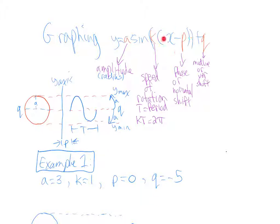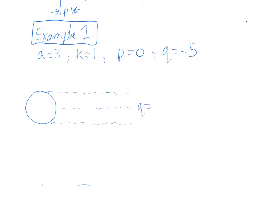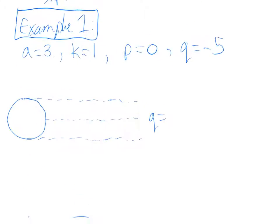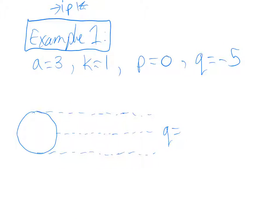So let's go ahead now and do a couple of examples. So here's our first example right here. Our first example is a equals 3, k equals 1, p equals 0, and q equals negative 5.